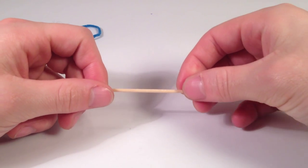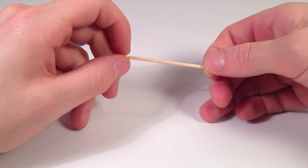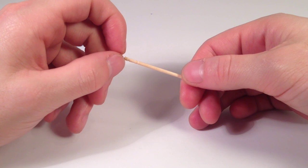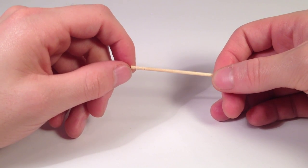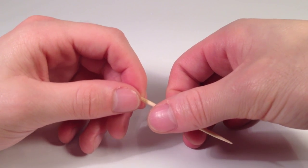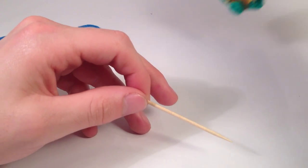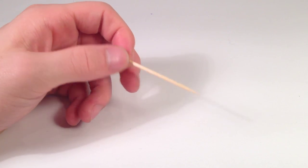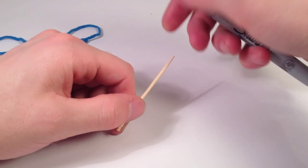And get a toothpick. Any toothpick's going to work, really, but sometimes it's easier if you have one that's pointy on both ends. So I got lucky, I have these ones that have this little design on this end, which is really useful when making nunchucks and stuff like that, but for making swords, it's usually easier if it's pointy on both ends.